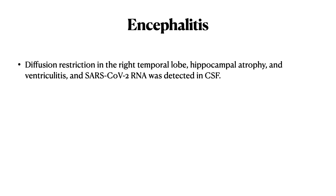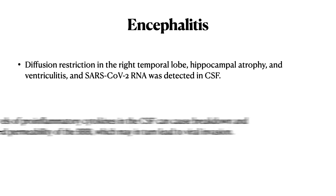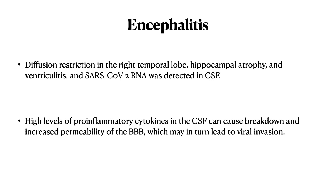Encephalitis is seen primarily as diffusion restriction in the right temporal lobe and hippocampal atrophy with vasculitis and ventriculitis, and SARS-CoV-2 RNA has been detected in the CSF. Additionally, high levels of pro-inflammatory cytokines in CSF can cause breakdown and increased permeability of the blood-brain barrier, resulting in an increased chance of viral invasion.